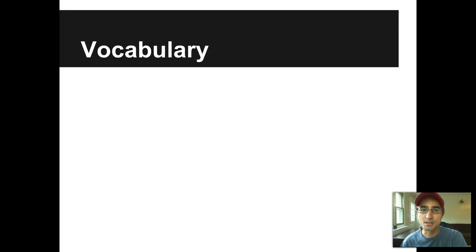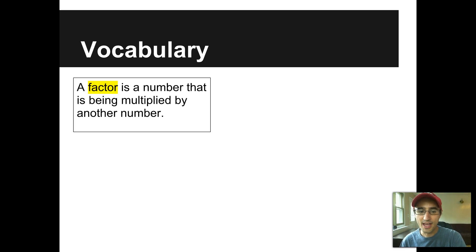We're going to begin this lesson with some vocabulary. These are the terms that you need to know. You might have learned some of these in fifth grade. Hopefully they're not completely new to you. Let's start with factor. A factor is a number that is being multiplied by another number. This is just the fancy terminology for this. You see this? That's a multiplication sentence. Each of those numbers has a name.